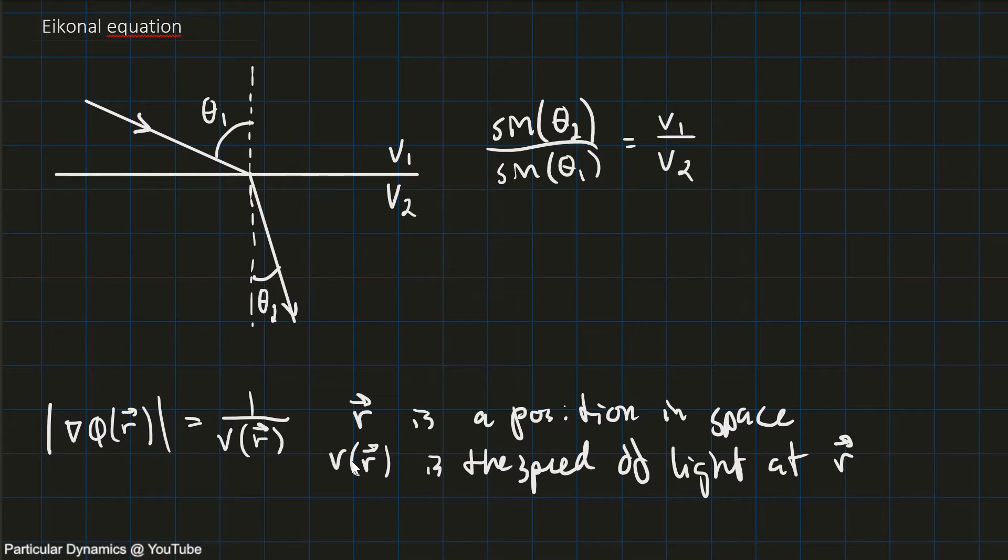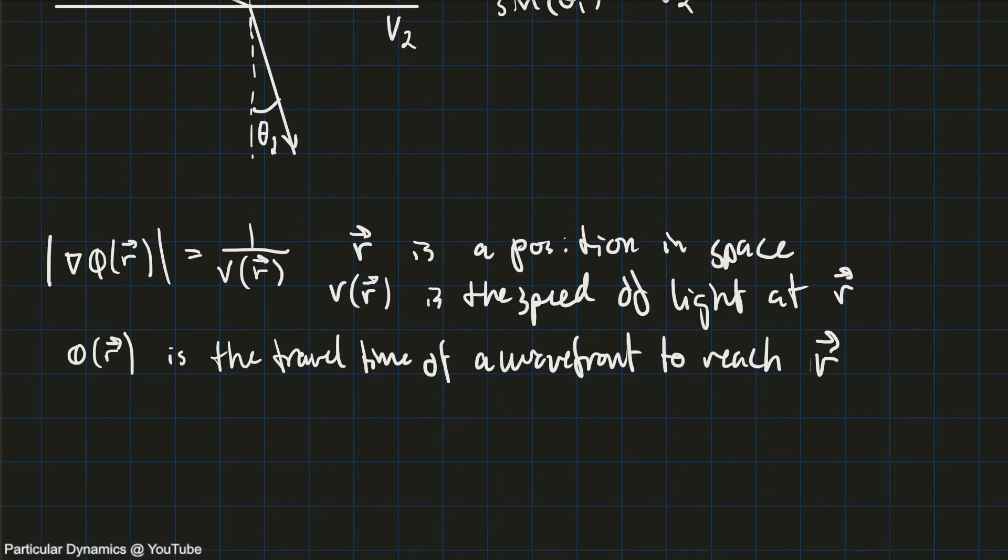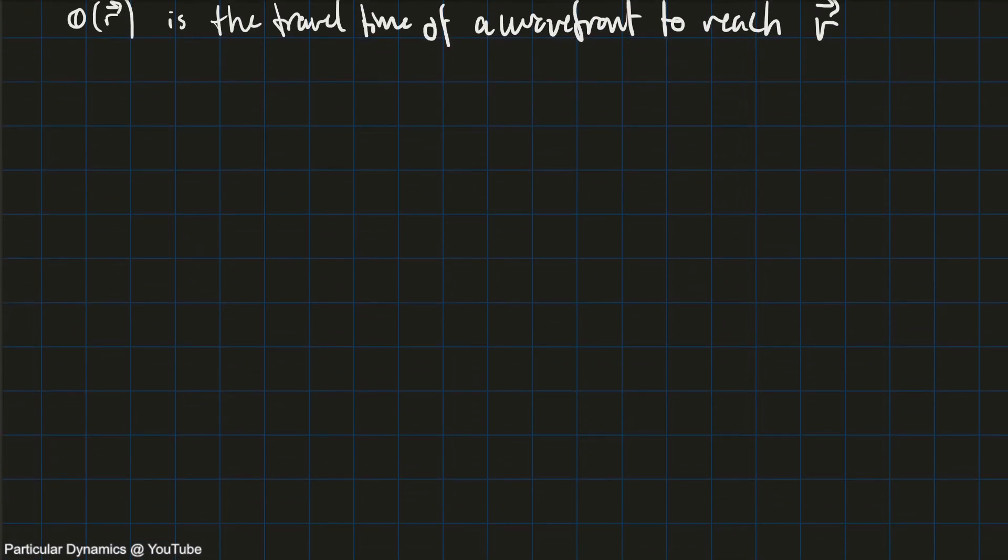And then the last part is, of course, the function phi of r. And this function represents the travel time of a wavefront to reach r. And to describe what this actually means, I need to make a more detailed example.